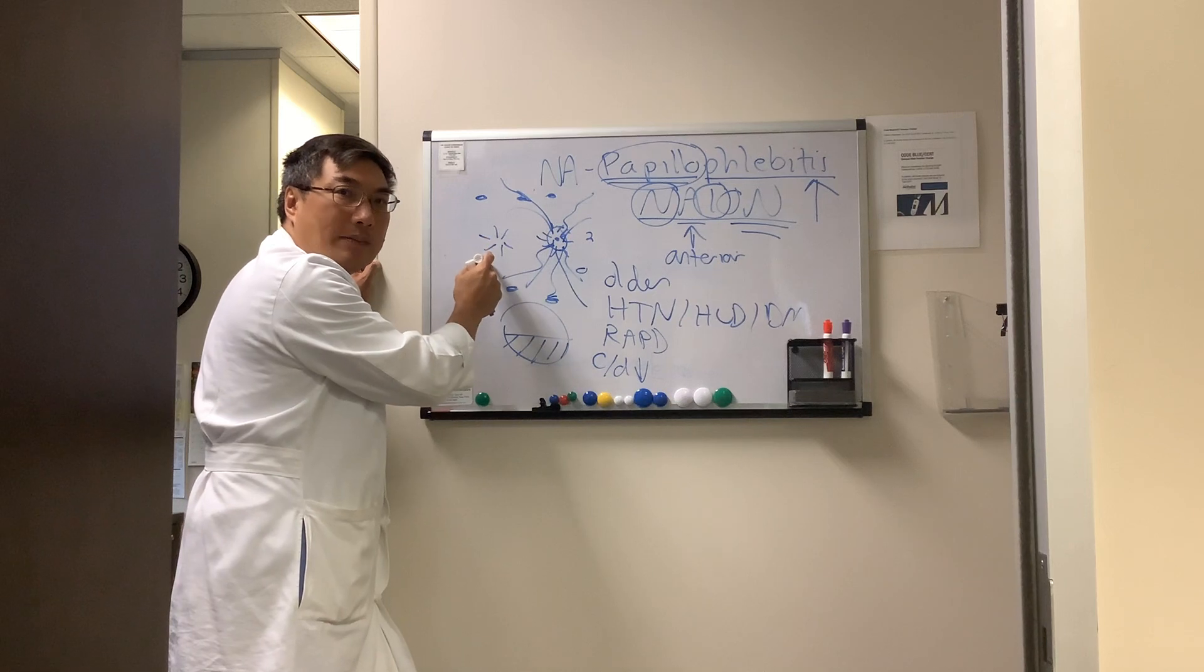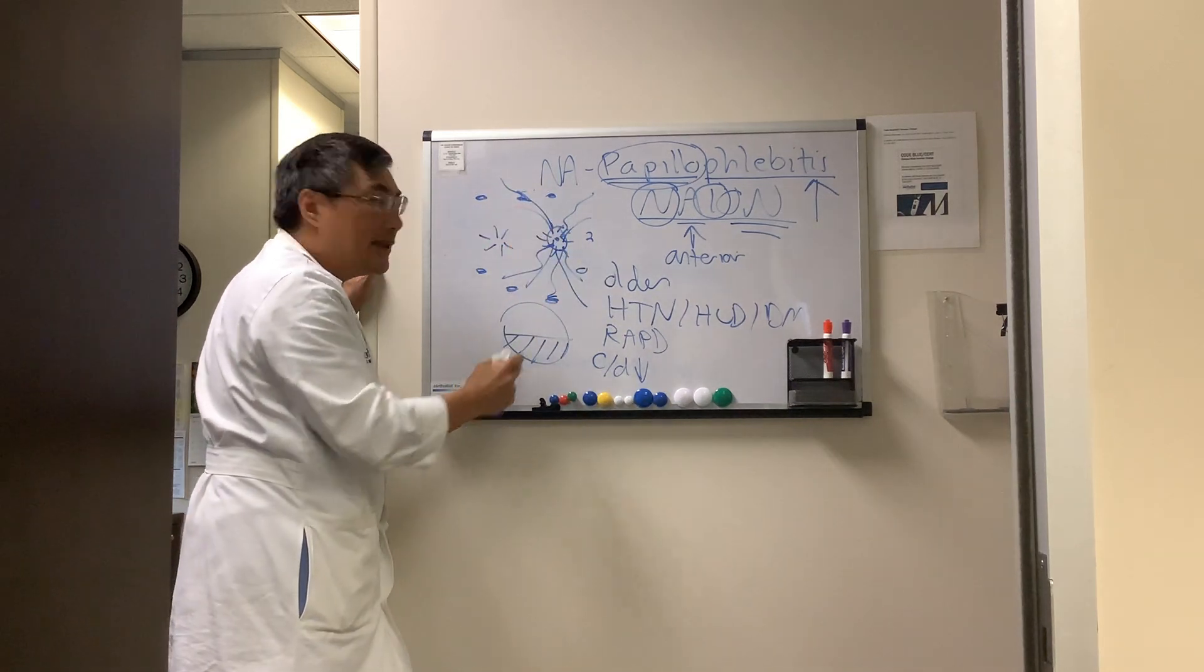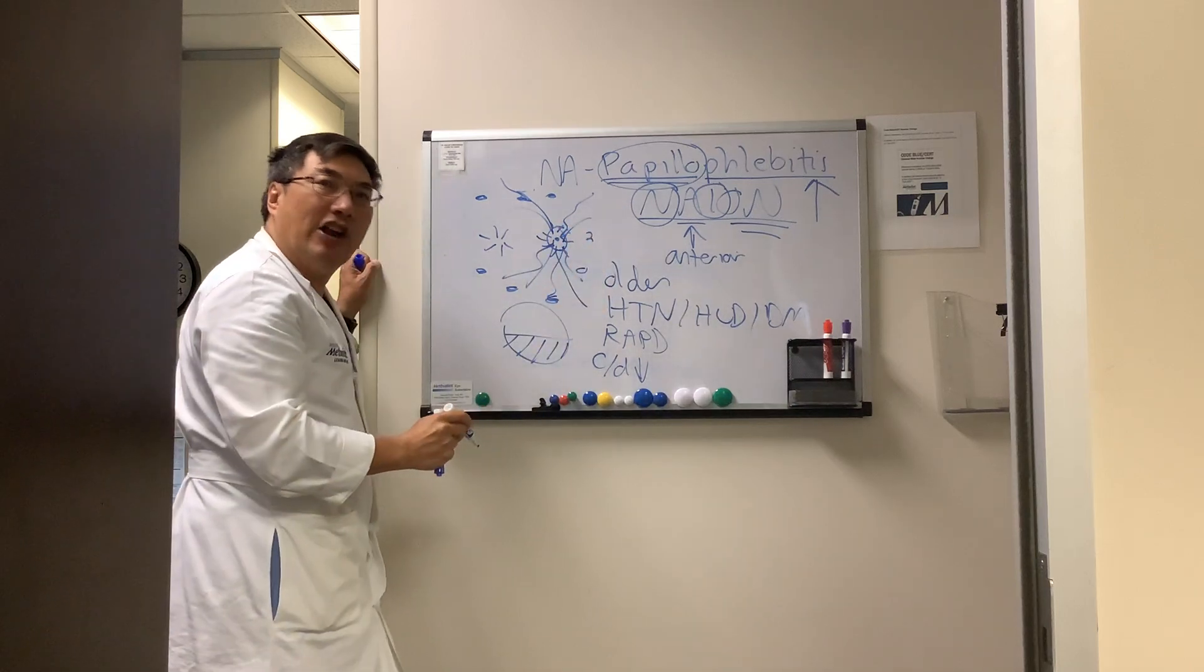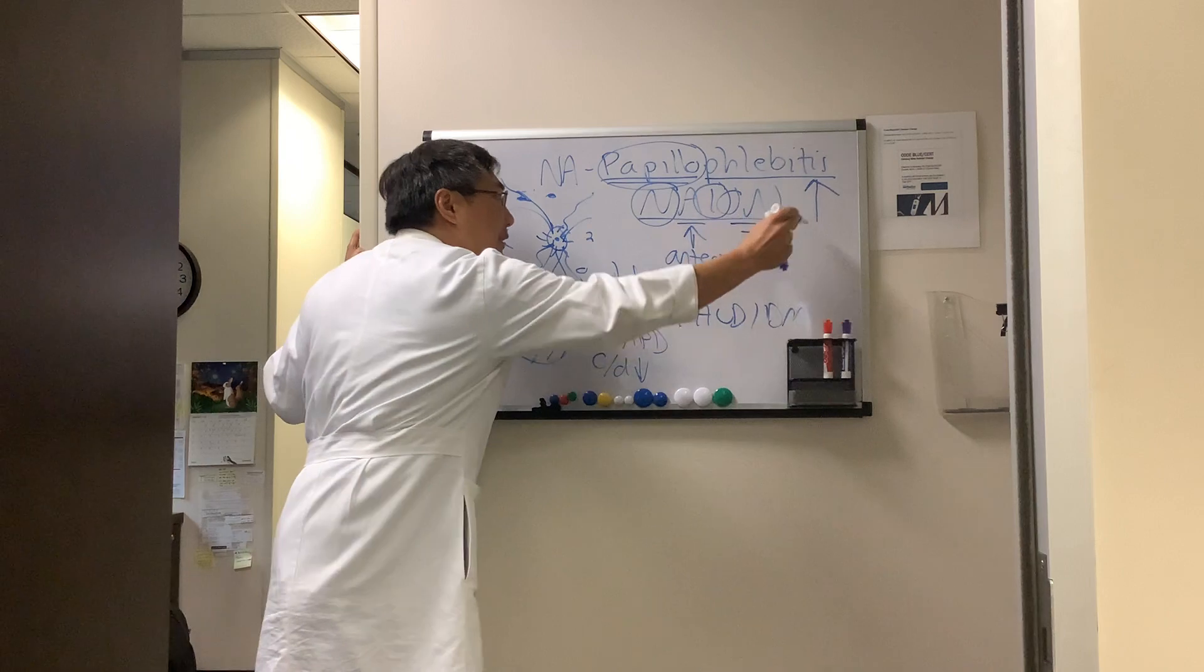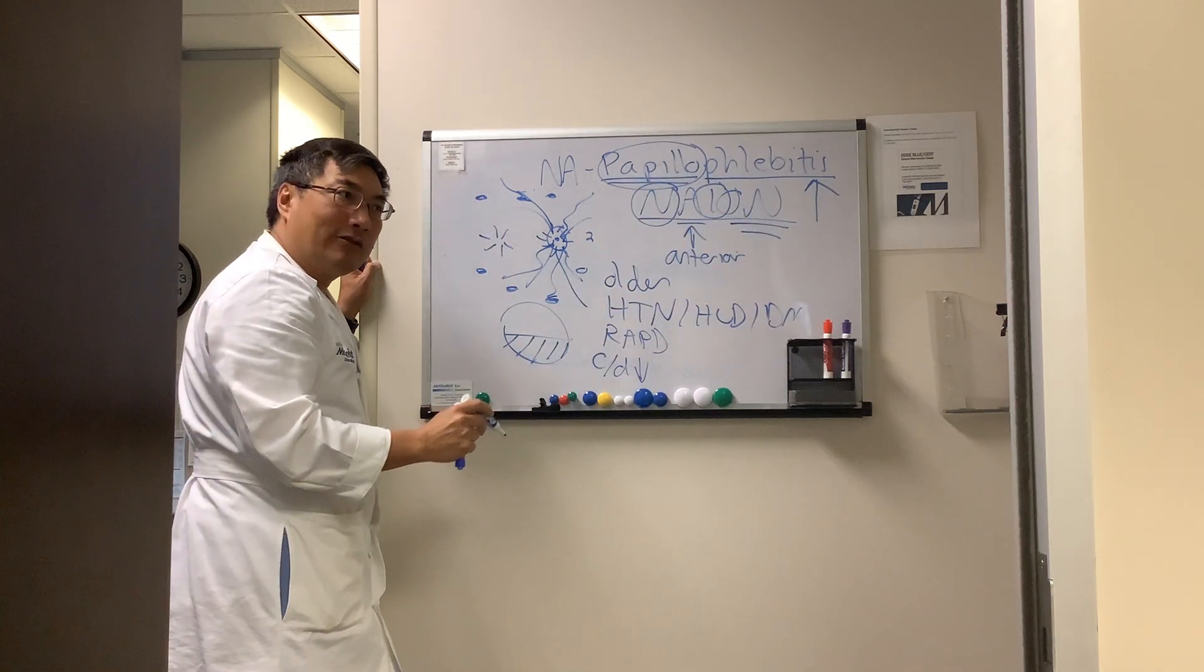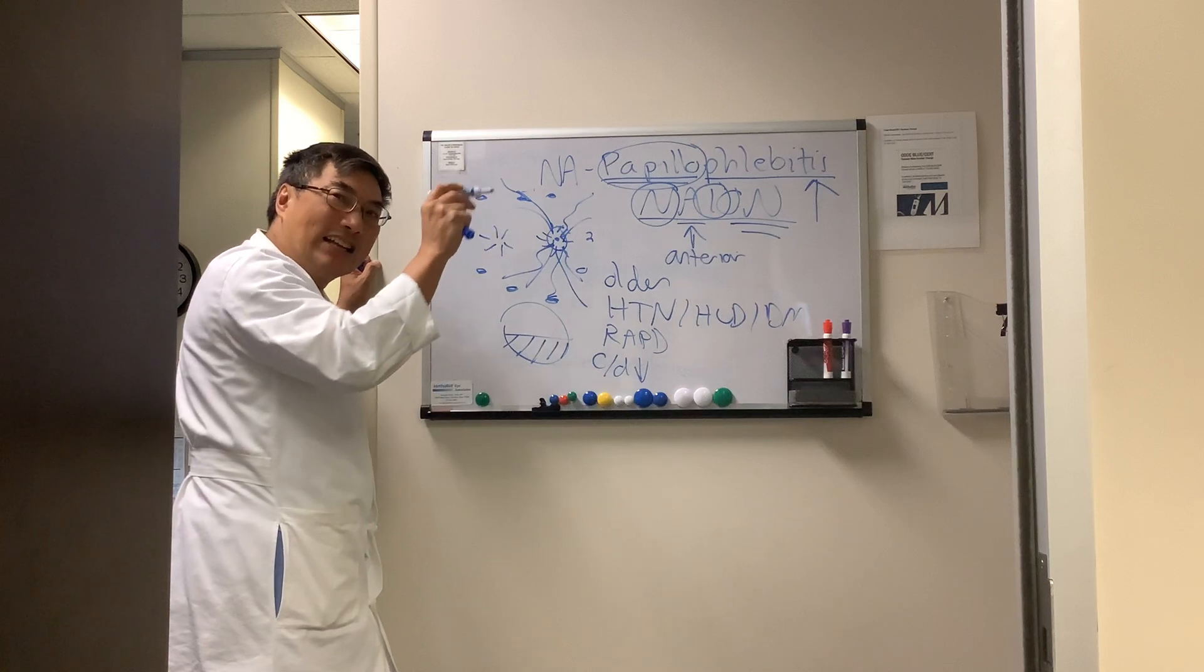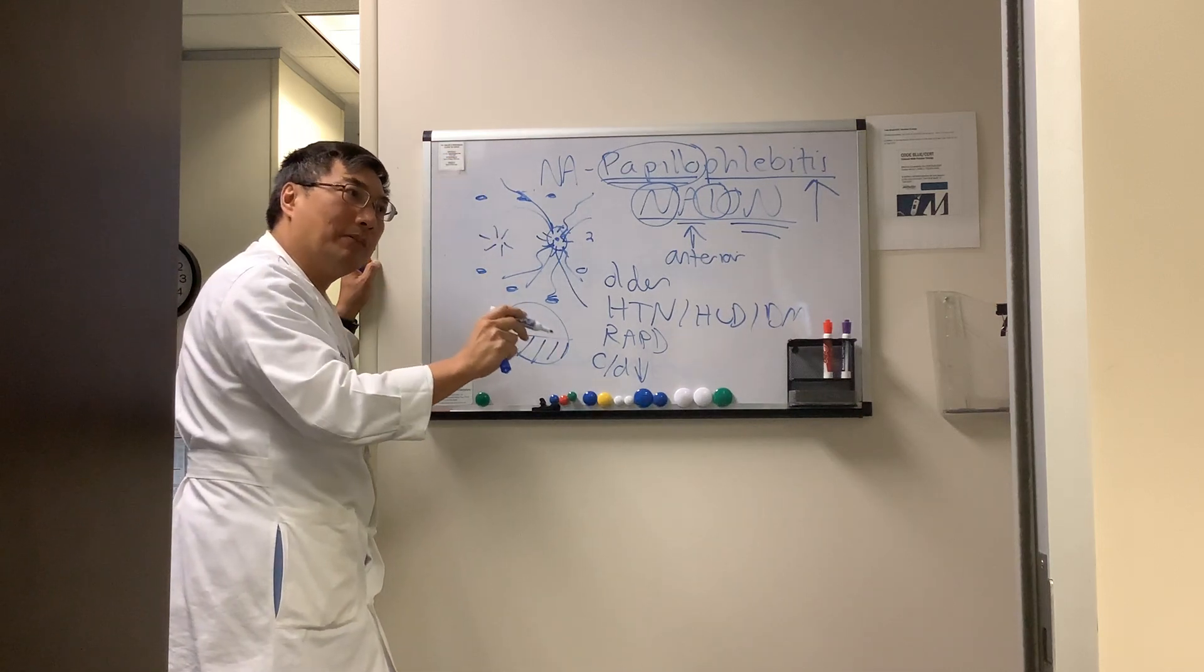The presence of this macular edema and these hemorrhages, as well as the dilated and tortuous veins, would not be expected in non-arteritic anterior ischemic optic neuropathy because the AION zone is in the short posterior ciliary arteries and the annular arteries of Zinn-Haller at the lamina cribrosa.